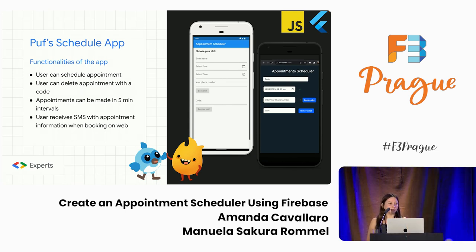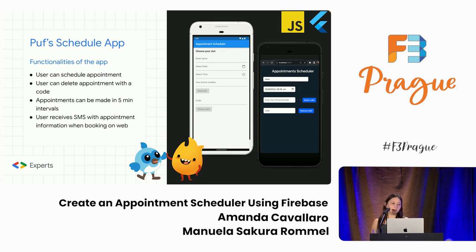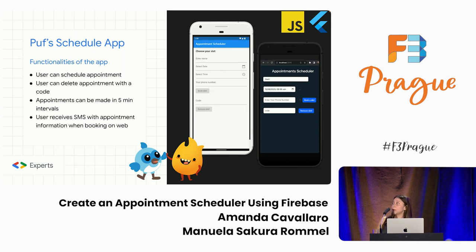Now let's get back to our scheduling app. Puff's scheduling app consists of a few functionalities: the user can schedule an appointment, the user can delete an appointment, and appointments can be made in five-minute intervals. The user will receive an SMS with appointment information if they are booking over web. You can see the web version on the black phone and the Flutter version on the white phone. That's the end product.